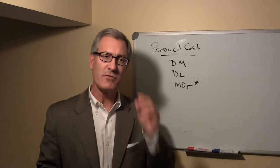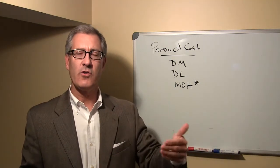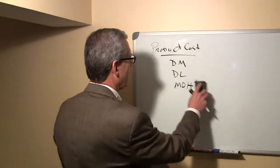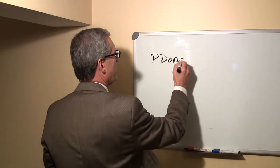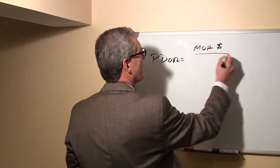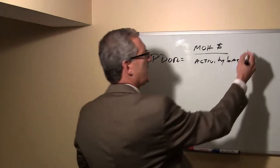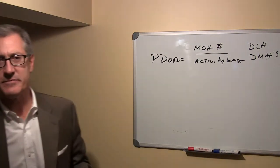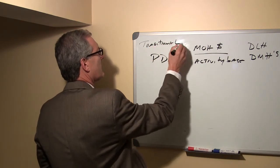When we're using activity-based costing, we're using several activity rates to apply overhead cost to our product. Let's take a moment and review what the predetermined overhead rate is. The predetermined overhead rate in a traditional model is the estimated manufacturing overhead dollars divided by an activity base. Primarily we're looking at direct labor hours or direct machine hours to make this allocation. But this is our traditional, conventional approach.